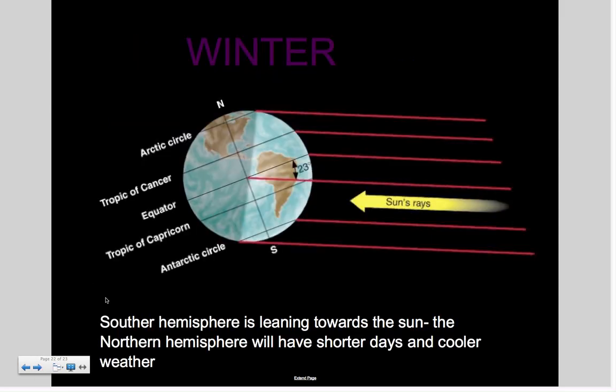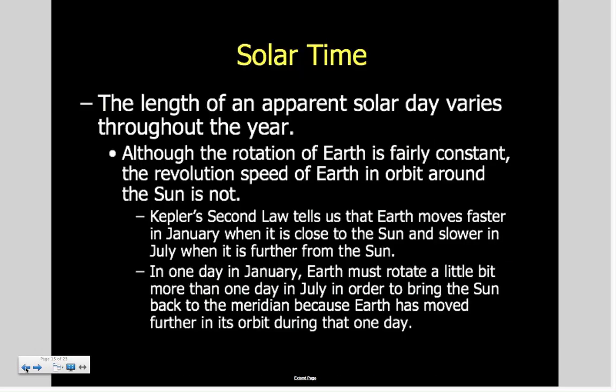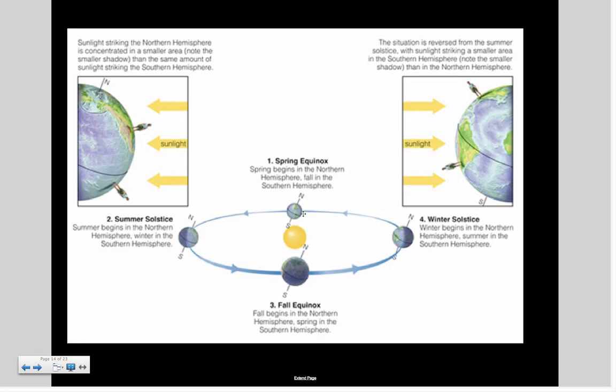In winter, the Southern Hemisphere is leaning towards the Sun, so the Northern Hemisphere is leaning away from the Sun on its axis. The Northern Hemisphere would have shorter days and cooler weather. If it's winter in the Northern Hemisphere, then it is summer in the Southern Hemisphere, and vice versa. If it's summer in the Northern Hemisphere, then it's winter in the Southern Hemisphere. That's a couple test questions on the CBA—whatever it is on the Northern Hemisphere, it would be the opposite in the Southern Hemisphere.